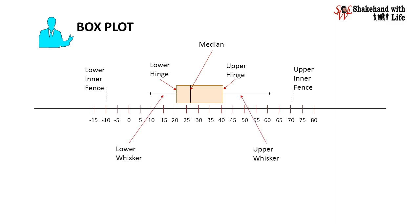Extend the whiskers from the upper hinge to the maximum data value 62 and from lower hinge to the minimum data value 11 in the given data set. Now interpret the box plot so formed.